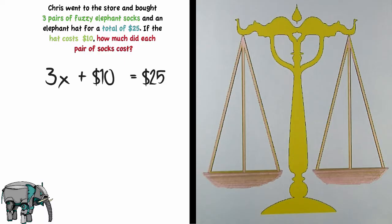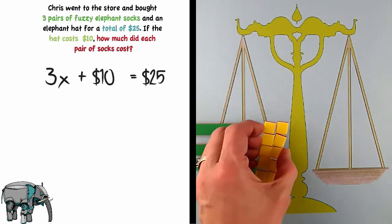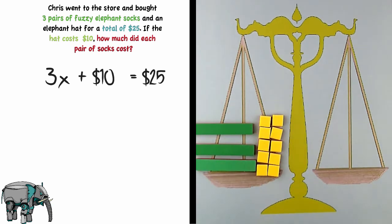To help us visualize how to solve this equation we are going to use our algebra tiles. To represent 3x I am going to use three green rods. And to represent each dollar I will use a yellow square. So I will need to put 10 yellow squares on this side of the scale and 25 yellow squares on the other side of the scale.